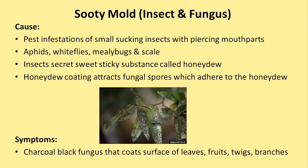Sooty mold is a fungus, but it's also tied to insects—specifically, infestations of small sucking insects with piercing mouthparts. If you have sucking insects like aphids, whiteflies, mealybugs, and scale, you're going to get sooty mold fungus because these insects secrete a sticky substance called honeydew. The honeydew lands on the leaves and attracts the sooty mold fungus. A lot of sooty mold on a tree means a lot of honeydew, which means a lot of insects.